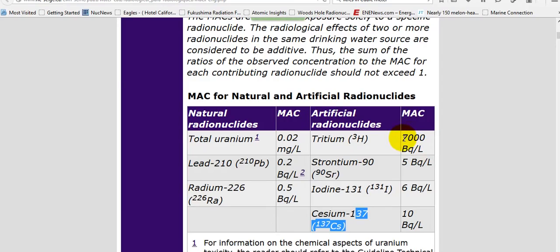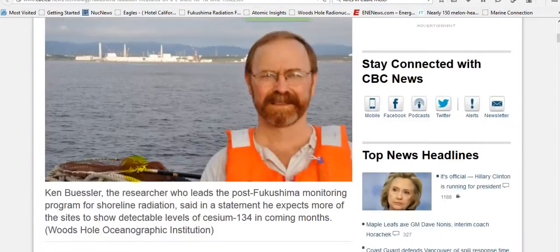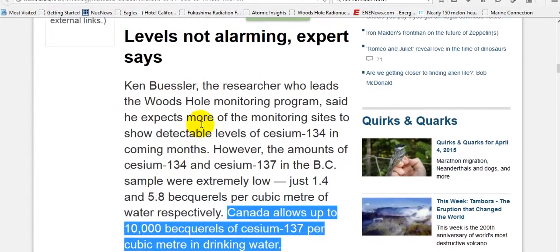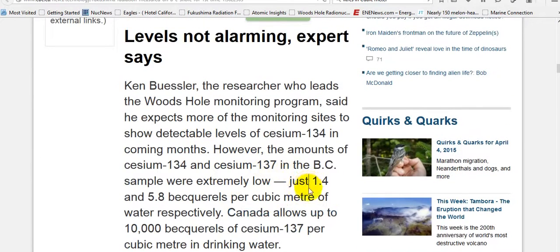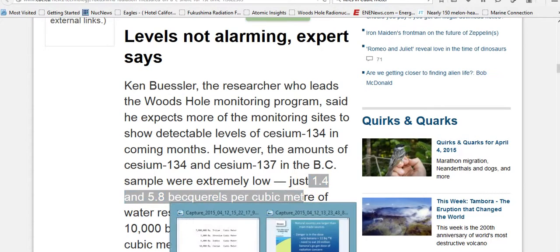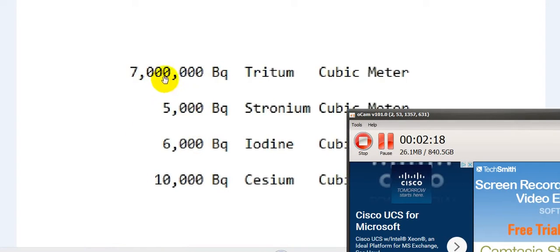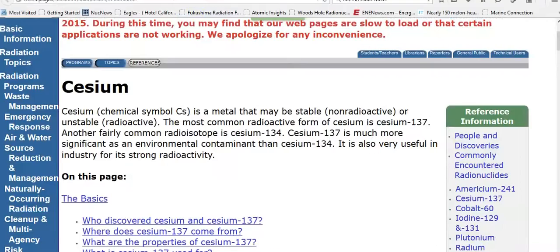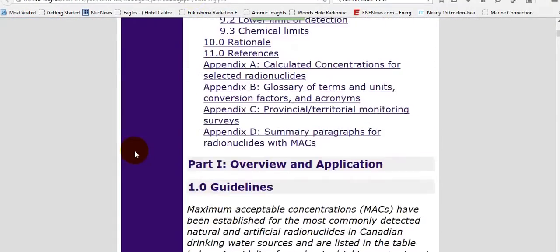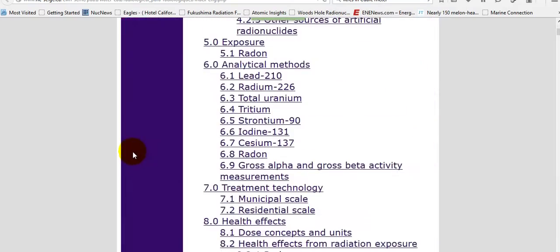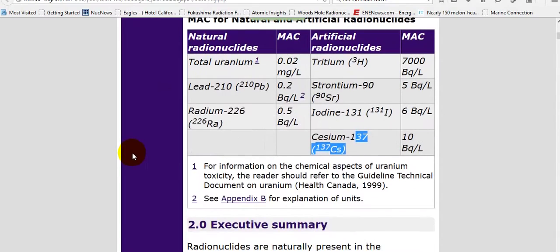7,000 becquerels a liter. A liter. Back to Ken Buesler for a second. What he found was 1.4 to 5.0 becquerels per cubic meter. So we're going to convert everything over to cubic meter. That's 7 million becquerels of man-made tritium per cubic meter in our drinking water. It's an acceptable standard according to Health Canada.